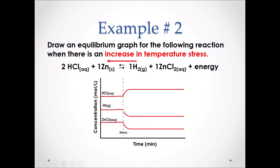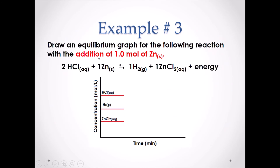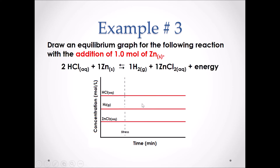Notice how there is no spikes in this graph. A temperature change will not spike the concentration of any species. Example number three. Draw an equilibrium graph for the following reaction with the addition of 1.0 moles of zinc solid. Zinc solid is insoluble. Therefore, it will not affect equilibrium and our graph will remain constant.